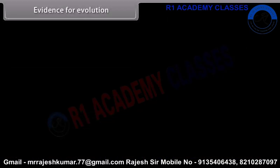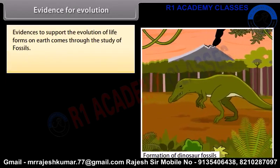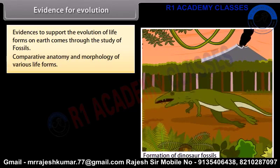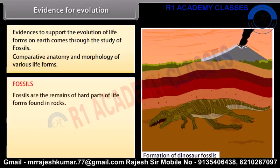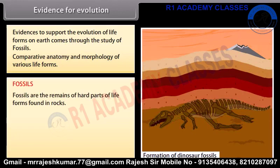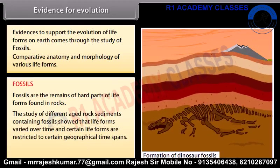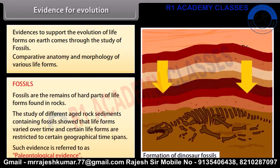Evidence for Evolution. Evidence to support the evolution of life forms on Earth comes through the study of fossils and comparative anatomy and morphology of various life forms. Fossils are the remains of hard parts of life forms found in rocks. The study of different aged rock sediments containing fossils showed that life forms varied over time, and certain life forms are restricted to certain geographical time spans. Such evidence is referred to as paleontological evidence.